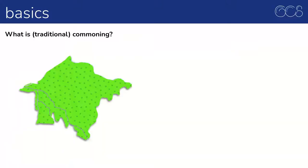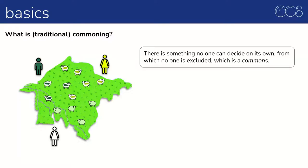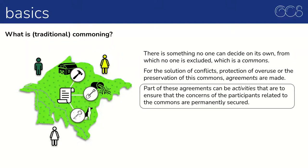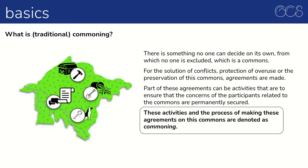What is traditional commoning? A commons is something no one can make decisions about on their own and from which no one is excluded. For the solution of conflicts, protection of overuse, or the preservation of this commons, agreements are made. Part of these agreements can be activities to ensure the concerns of the participants related to the commons are permanently secured. These activities and the process of making agreements on these commons are denoted as commoning.